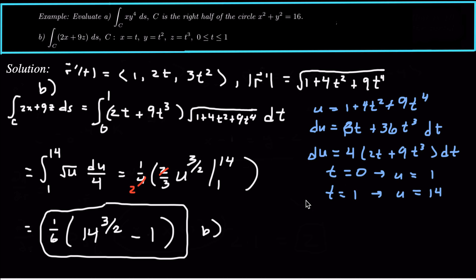That is the general procedure. Either we have to parameterize the curve ourselves, or we're given the parameterization. The key is to remember: is it a scalar function? That's usually indicated by the ds at the end of the integral. If there's a ds, take the line integral over curve C of the scalar function, and multiply by the magnitude of r'(t), where r is the vector function with components x, y, and z. That's our approach — that's how we do it.